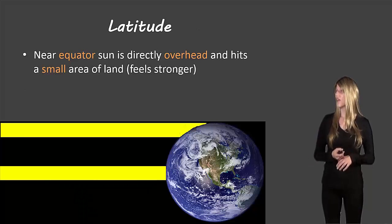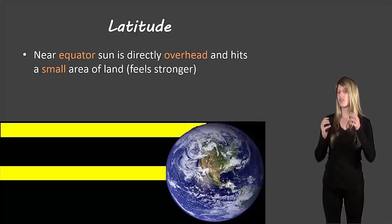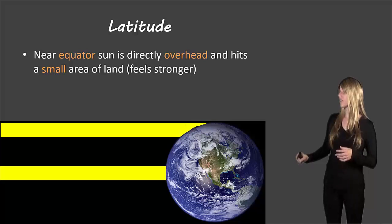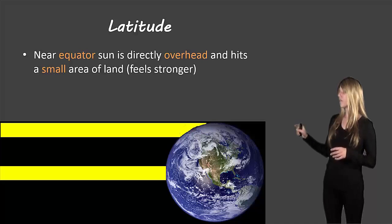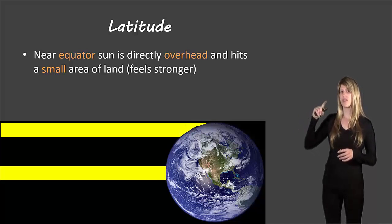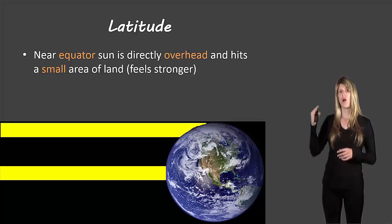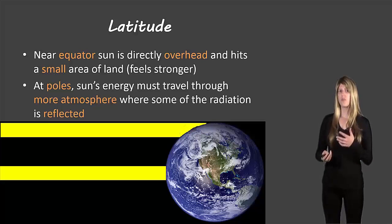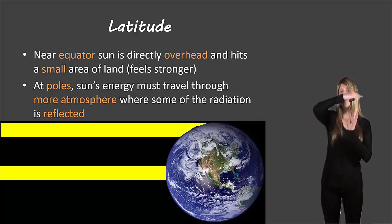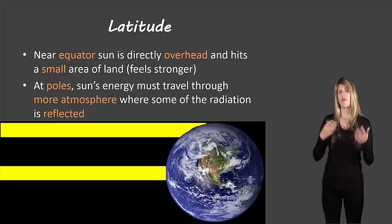Near the equator the sun is much more directly overhead. As you can see from the picture, the line going towards the equator hits a small area of land, whereas further toward the poles the same amount of sunlight spreads over a much wider area of earth. So the sun feels a lot stronger and it's a lot hotter at the equator. Also at the poles, the energy has to travel through more atmosphere because it's coming in at an angle, so some of the radiation gets reflected, making it even colder.